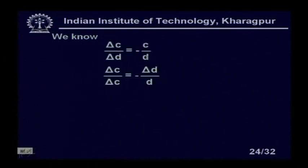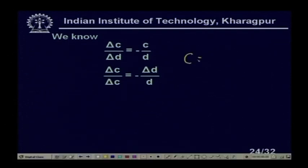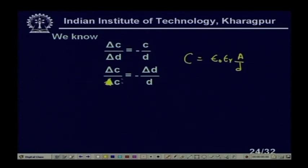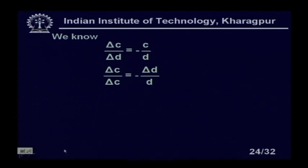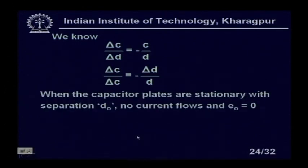From C = ε₀εᵣA/D, we can write ΔC/ΔD = -εA/D², so ΔC/C = -ΔD/D. When the capacitor plates are stationary with separation D₀, no current flows and output voltage is zero. If there is a relative displacement Dᵢ from position D₀, a voltage E₀ is produced.